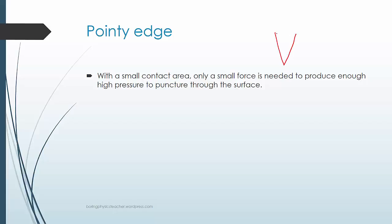What do we mean by small area? The contact area over here is very small as compared to a blunt object. So you find that the contact area over here is generally bigger. So this area is big.